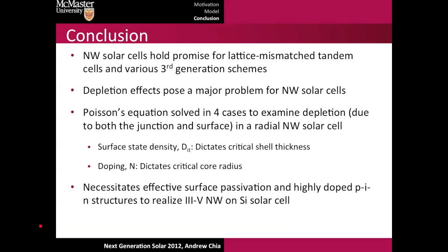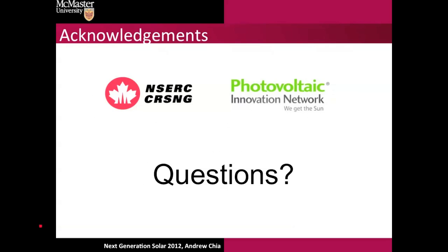This really shows that effective passivation and highly doped PIN structures are necessary to utilize 3-5 nanowires on silicon cells. I'd just like to end by thanking some funding agencies and asking if you have any questions.